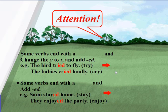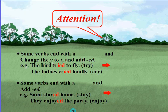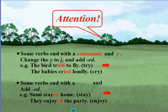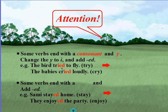Pay attention to something else, guys. Some verbs end with a consonant and the letter y, so we have to change the y to i and add -ed to form the simple past. Example: the bird tried to fly. The base verb is try and it ends with a consonant plus the letter y, so we changed the y to i and added -ed to show that the action happened in the past.